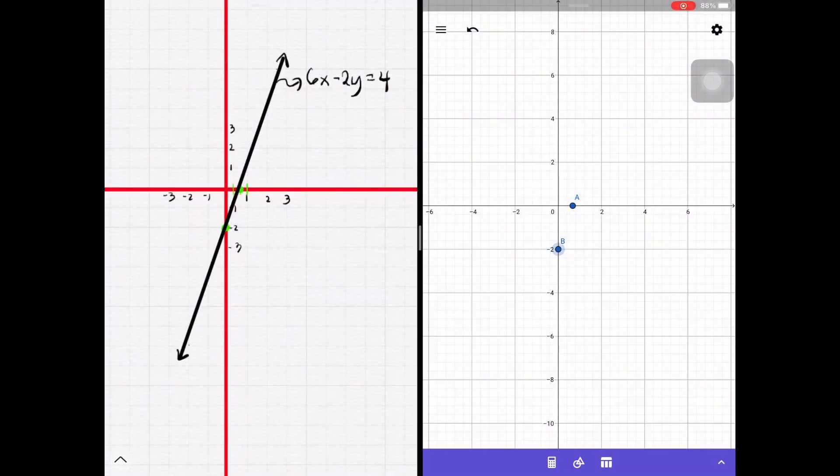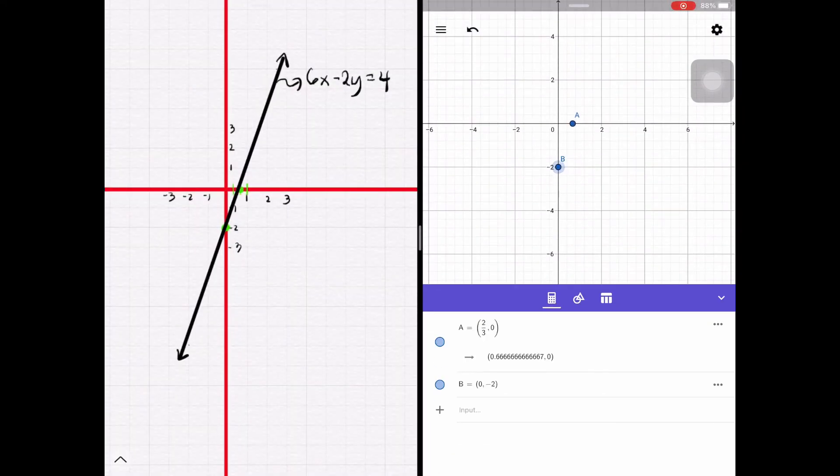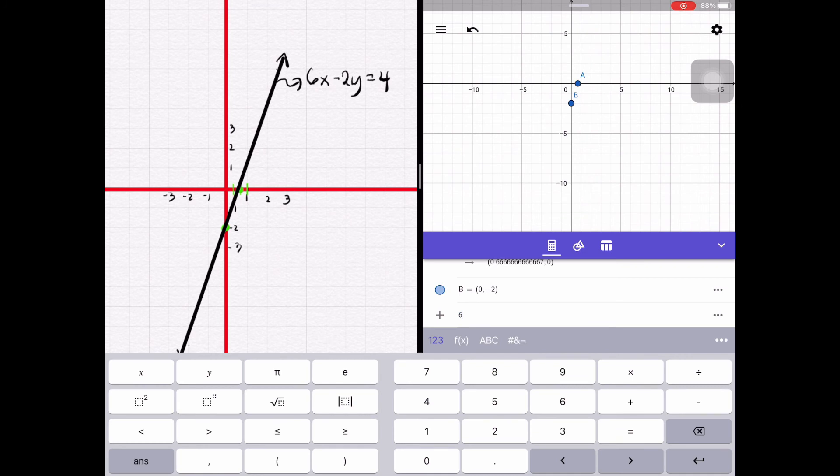And to verify if these intercepts would really be the intercepts of the equation 6x - 2y = 4, the equation of the line 6x - 2y = 4 should pass through these points.